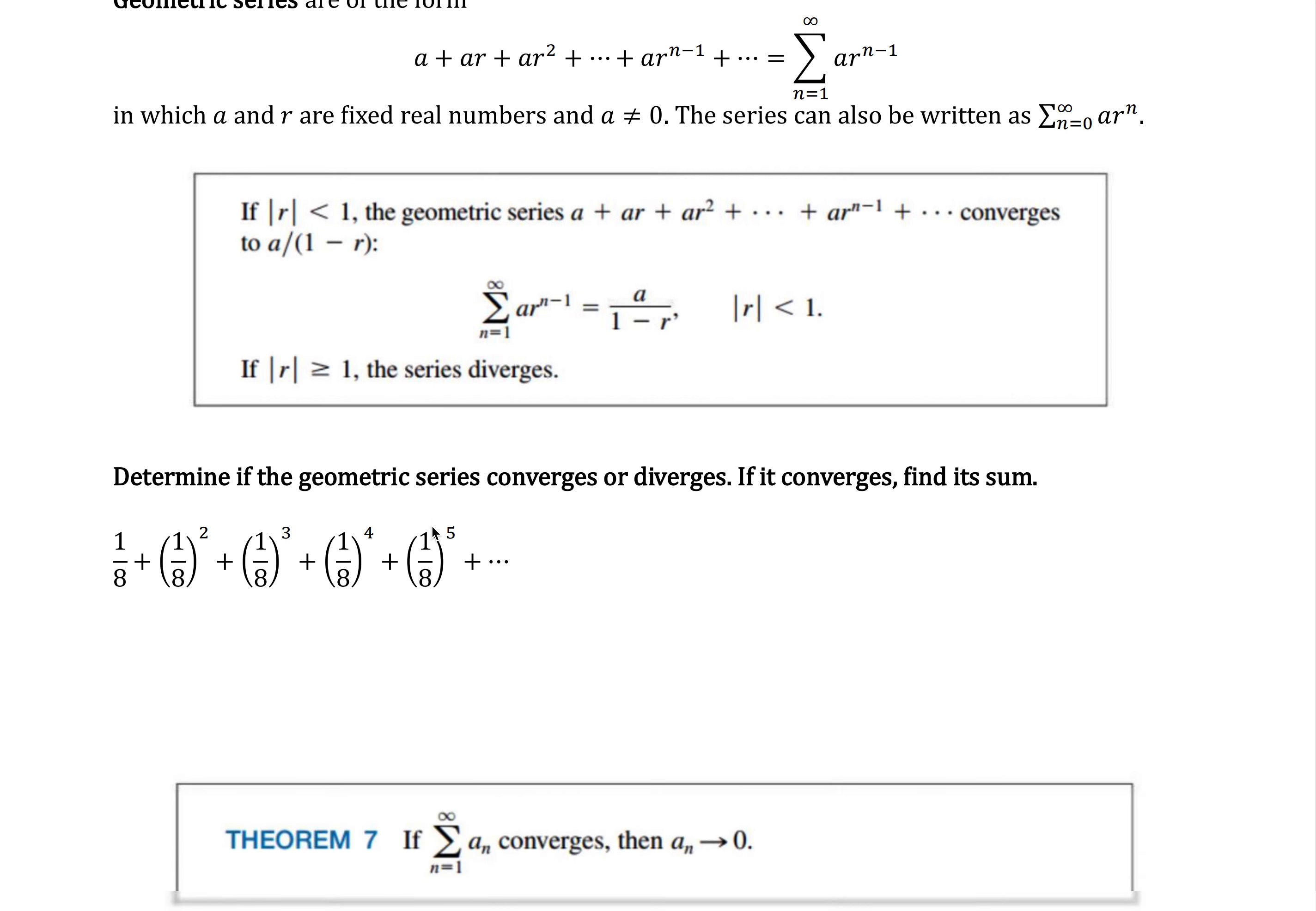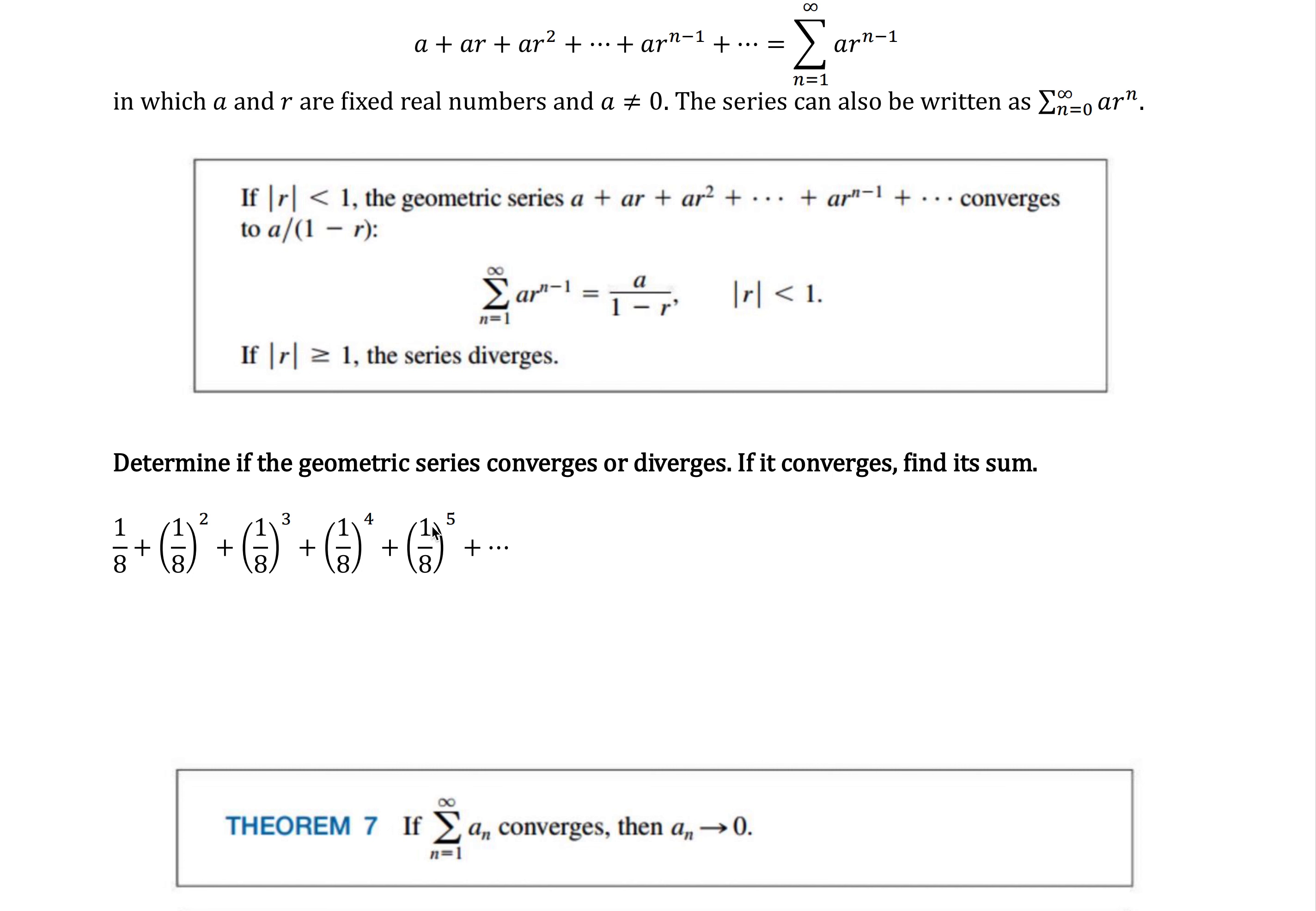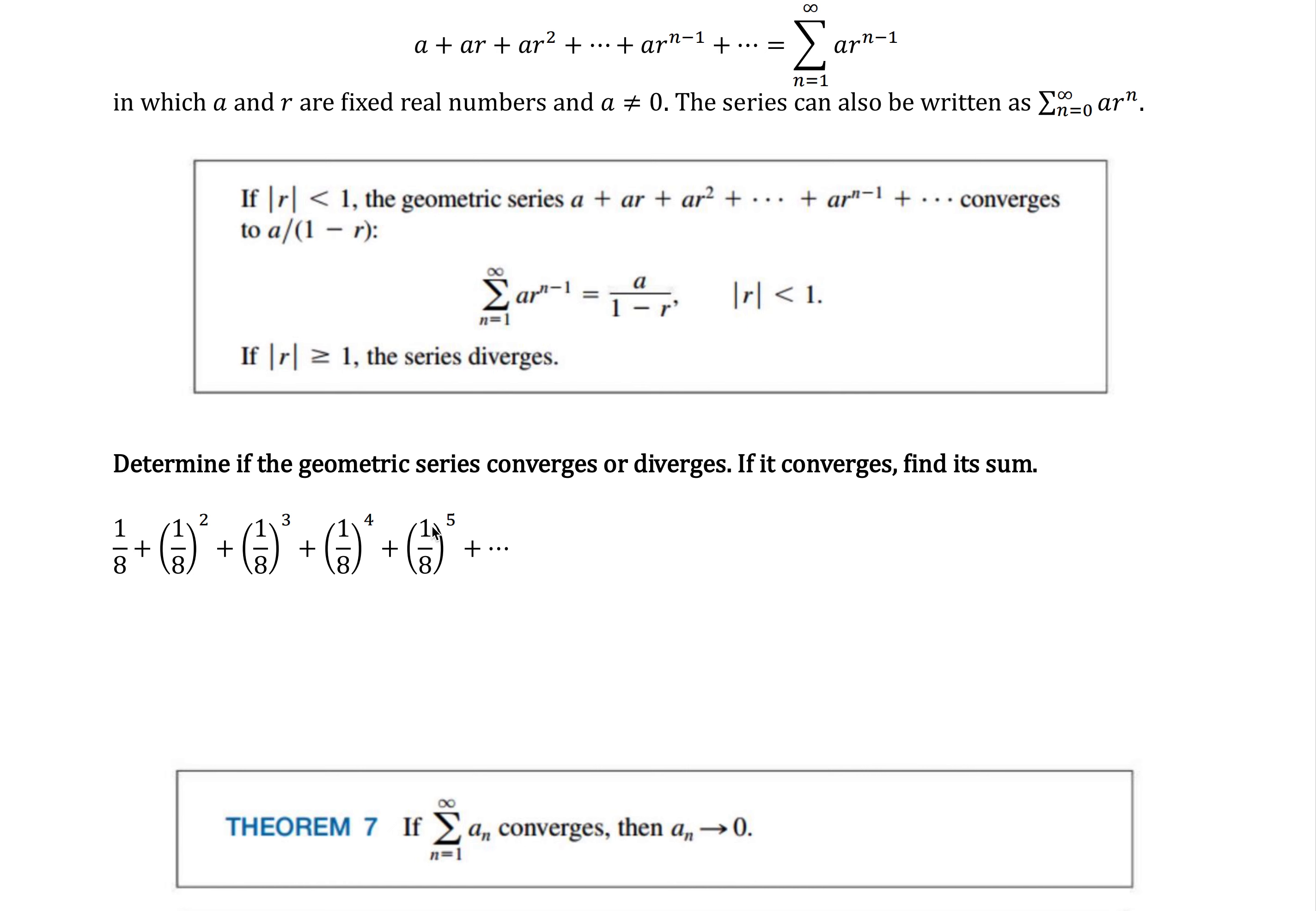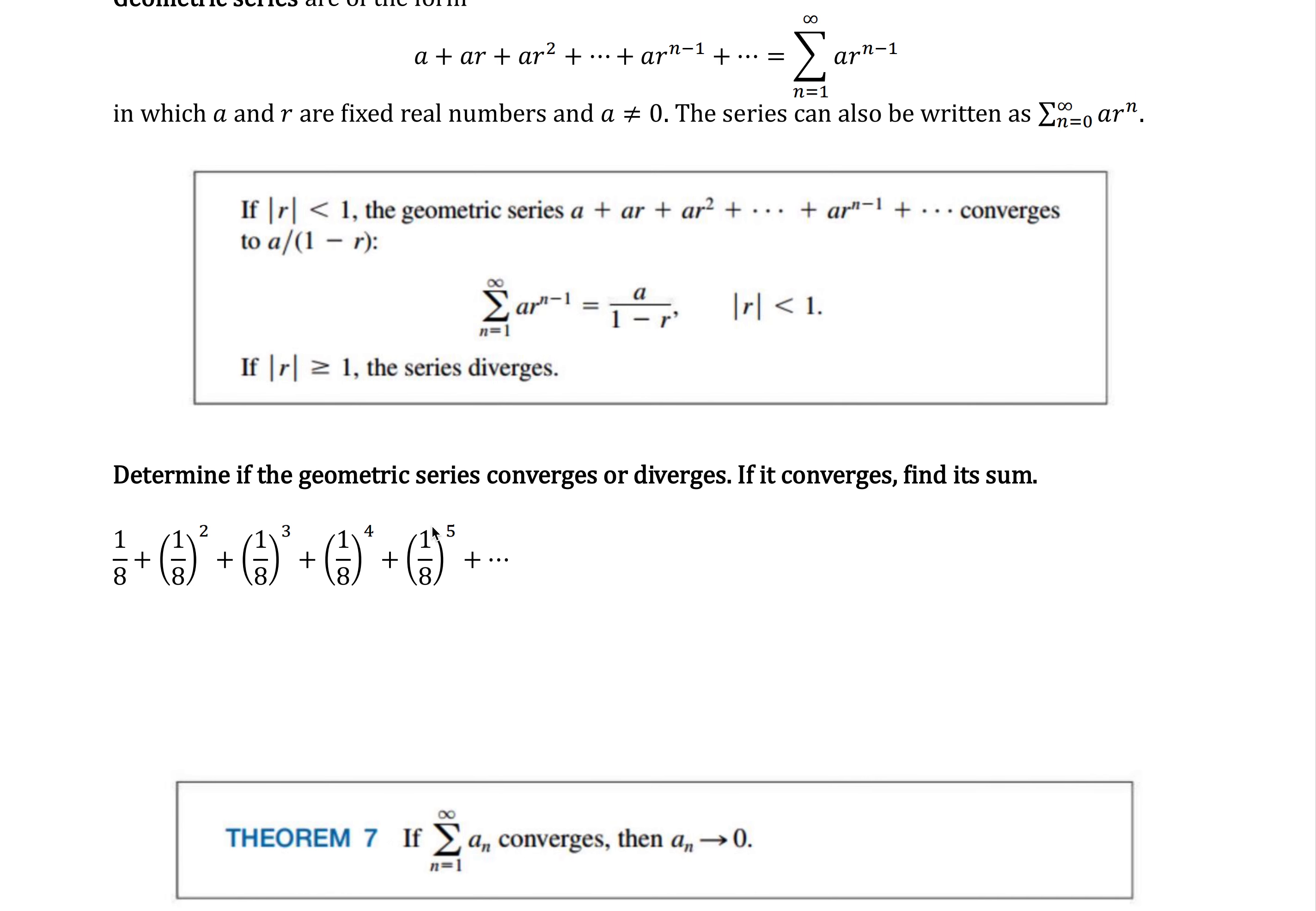So I'm going to do one example here for this video. It says, determine if the geometric series converges or diverges. If it converges, find its sum. So if you look here at the top, we have a plus a times r plus a times r to the second. Here I've got 1/8 plus 1/8 squared plus 1/8 cubed.